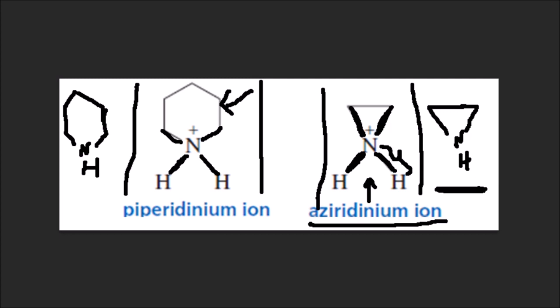Looking at the pKa values: the three-membered ring conjugate acid has a pKa of 8, and the six-membered ring conjugate acid has a pKa of 11.1. So the three-membered ring acid is stronger, confirming that the three-membered ring base is weaker.